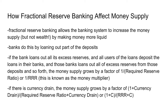Fractional reserve banking allows money to become more liquid, shifting money supply to the right — note that this doesn't increase wealth. If banks loan out all excess reserves and loaners deposit all of that into their bank and so on, you can calculate the change in money supply using the formula one divided by the required reserve ratio (1/RRR). This is known as the money multiplier.